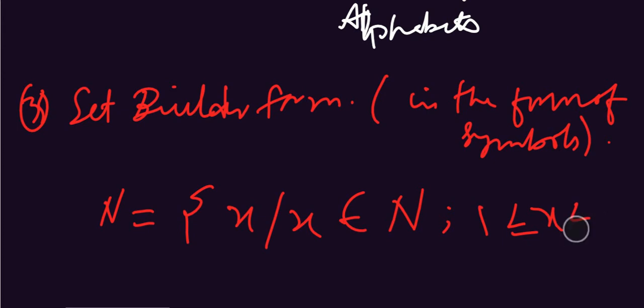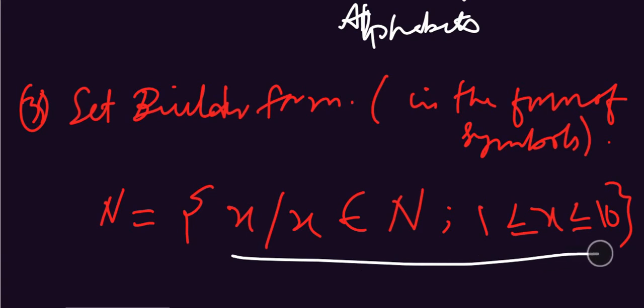For example, a set can be expressed in set builder form as: {x ∈ ℕ | 1 < x ≤ 10}. I hope you liked this. Please like, comment, share and subscribe to my channel. In the next video we will learn about the types of sets. If you have any questions, you can ask in the comment box. Stay connected for more videos. Thank you.